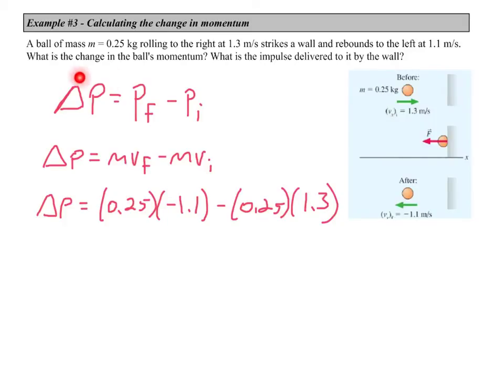So, if we're looking for the change in momentum, that's just going to be our final momentum minus our initial momentum. Expression for momentum is mass times velocity. So, we have mvf, that's for the final momentum, minus the initial momentum. We plug in our values and we end up with a change in momentum of negative 0.6 kilograms meters per second.